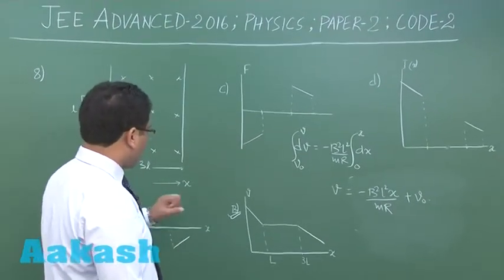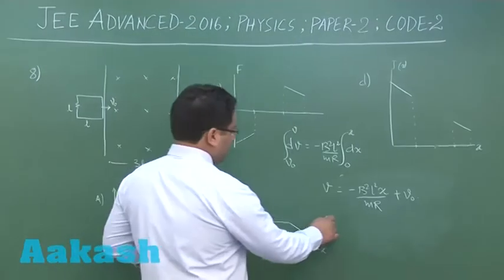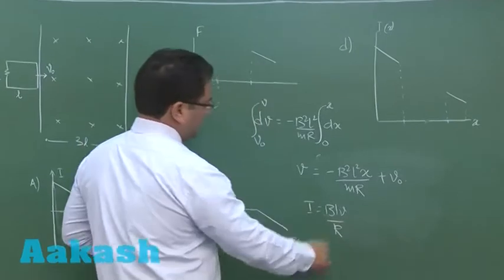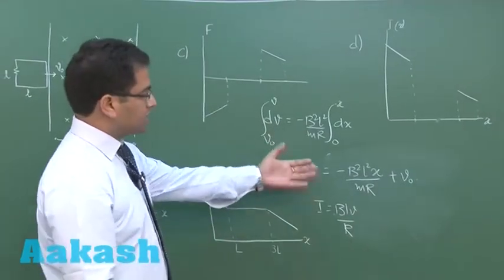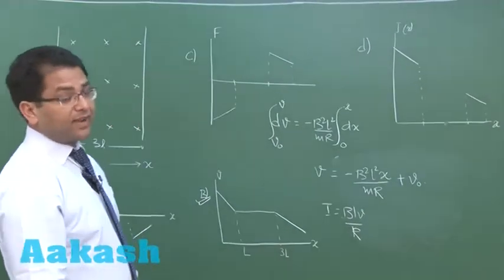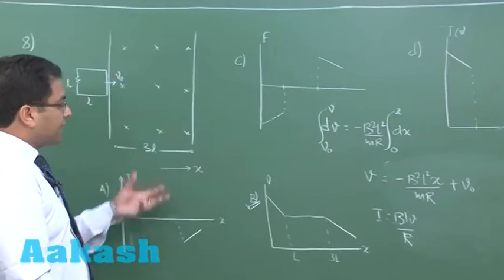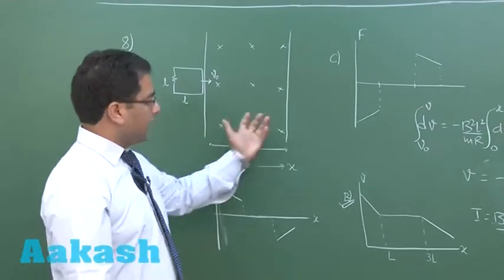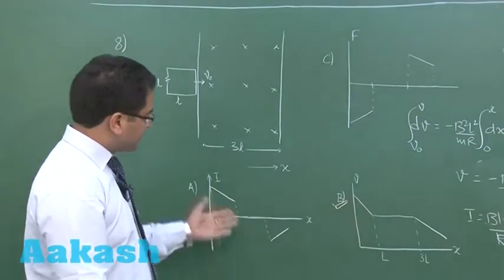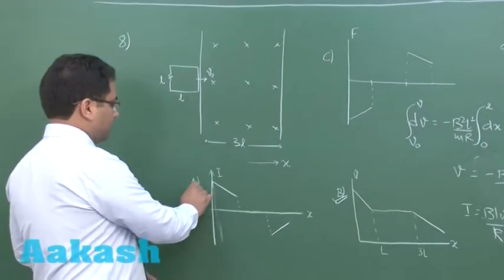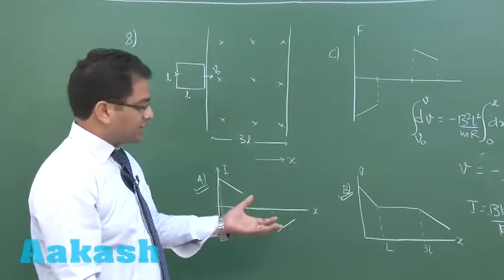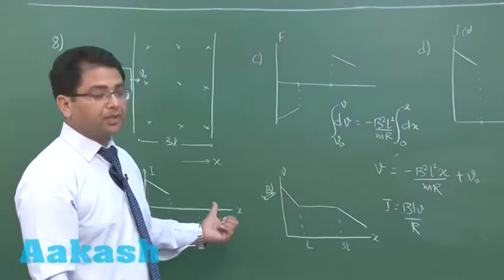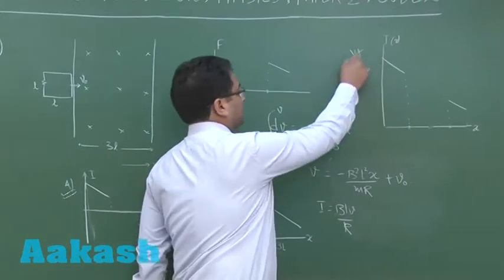How about the current I? I = BLV/R, and the variation would be the same except for the fact that the direction of current would reverse during the entering and exiting phases. So there is straight-line variation, but during entering there is one direction and during exiting there is the other direction. So option A is correct, and option D can be eliminated.